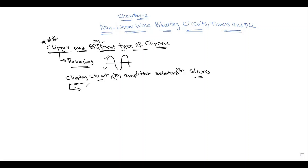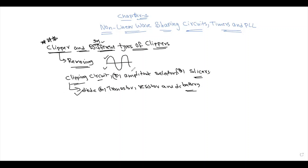Clipper circuits are built using components such as diodes, transistors, resistors, and DC batteries. Simply put, a clipper cuts portions of the input signal either above or below a certain level.